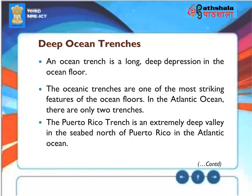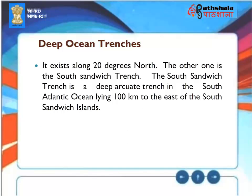Deep Ocean Trenches: An ocean trench is a long, deep depression in the ocean floor and one of the most striking features of ocean floors. In the Atlantic Ocean, there are only two trenches. The Puerto Rico Trench is an extremely deep valley in the seabed north of Puerto Rico, existing along 20 degrees north. The other is the South Sandwich Trench, a deep arcuate trench in the South Atlantic Ocean lying 100 kilometers to the east of the South Sandwich Islands.